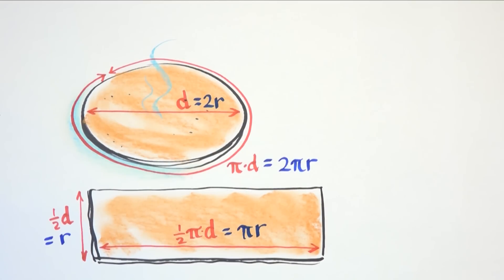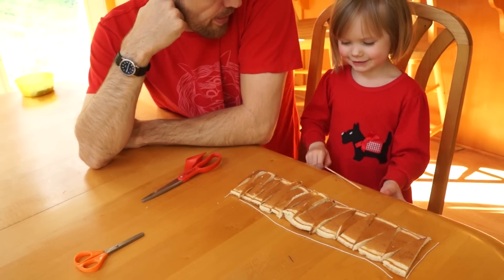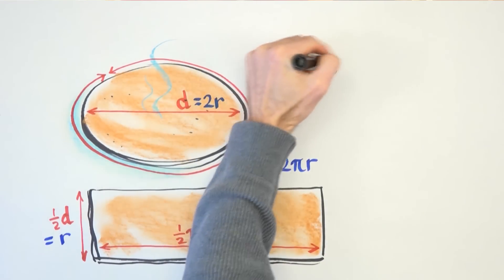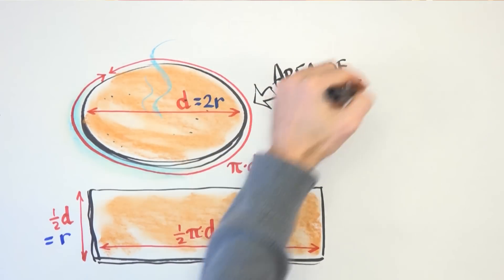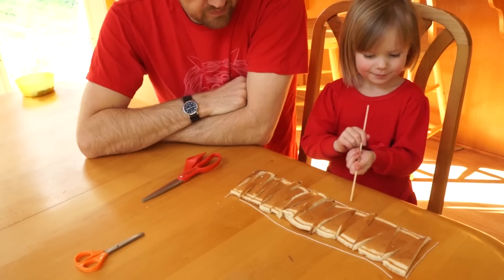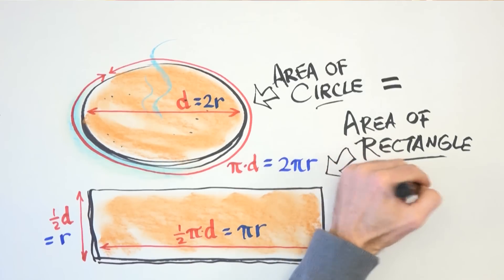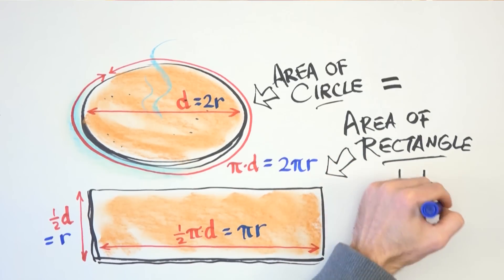What kind of shape did we start with? A circle. Yeah. And we were able to turn it into what? A rectangle. And did we have to use any numbers to do that? No. We just cut it up? Mm-hmm.